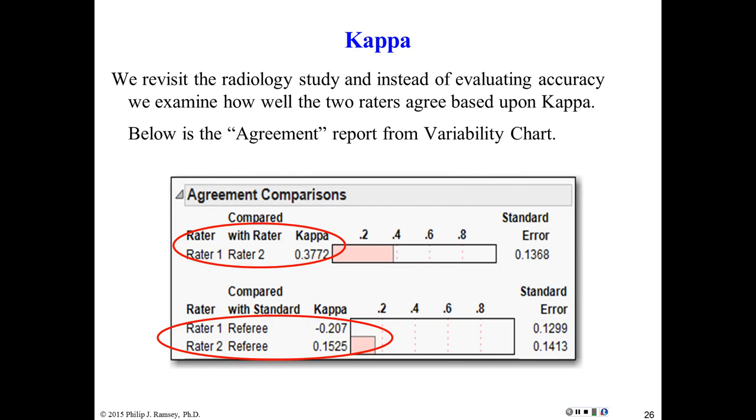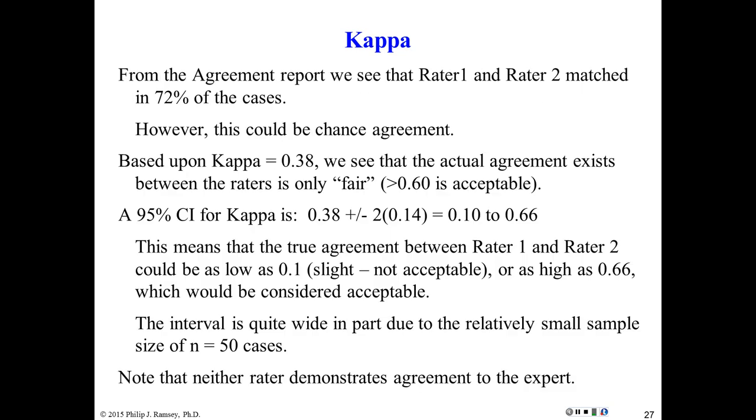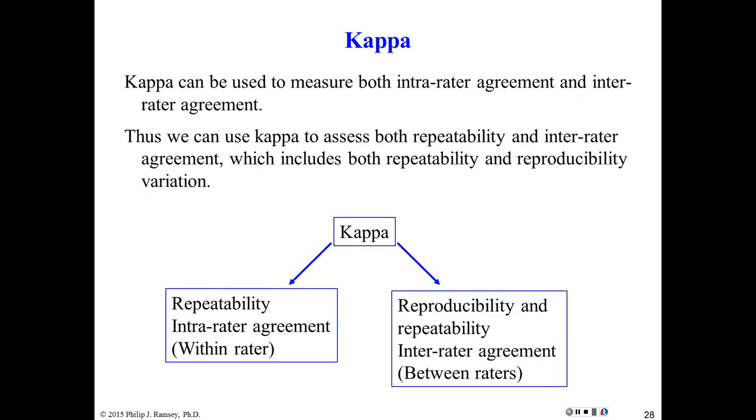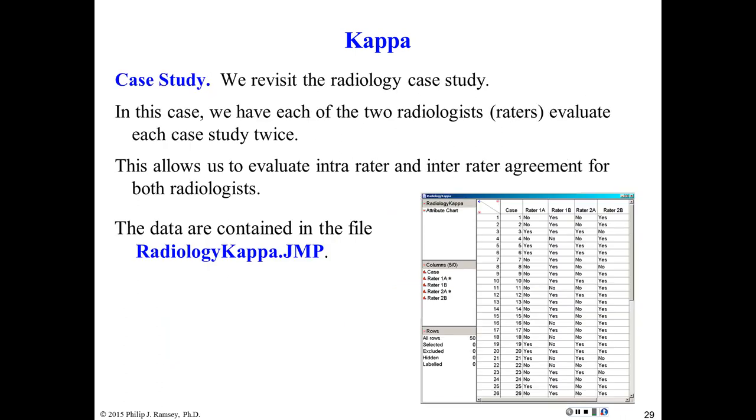You can do agreement in JMP in the variability chart platform. Remember, Kappa can look at repeatability and reproducibility, but there's no simple mathematical way to completely separate the two.